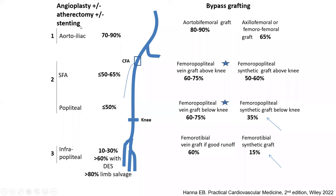We divide the arterial segments into three: the aortoiliac, the femoralpopliteal (mainly SFA and popliteal artery), and the infrapopliteal territory. I'll add a fourth — the infraankle territory, the pedal and plantar arteries, which is relevant for the CLI population. What you notice is: the more proximal you are — for example, aortoiliac — the better the patency is for both modalities.